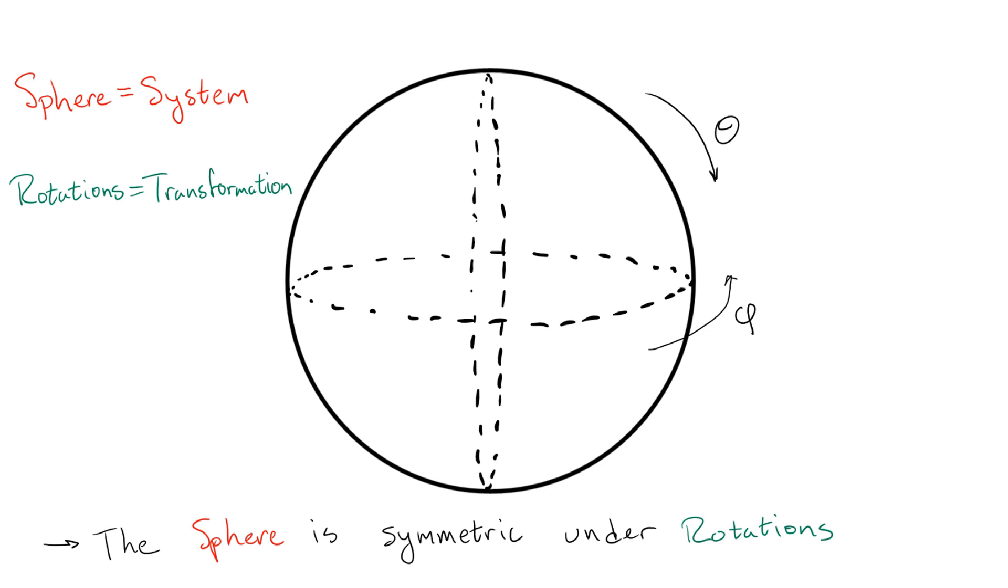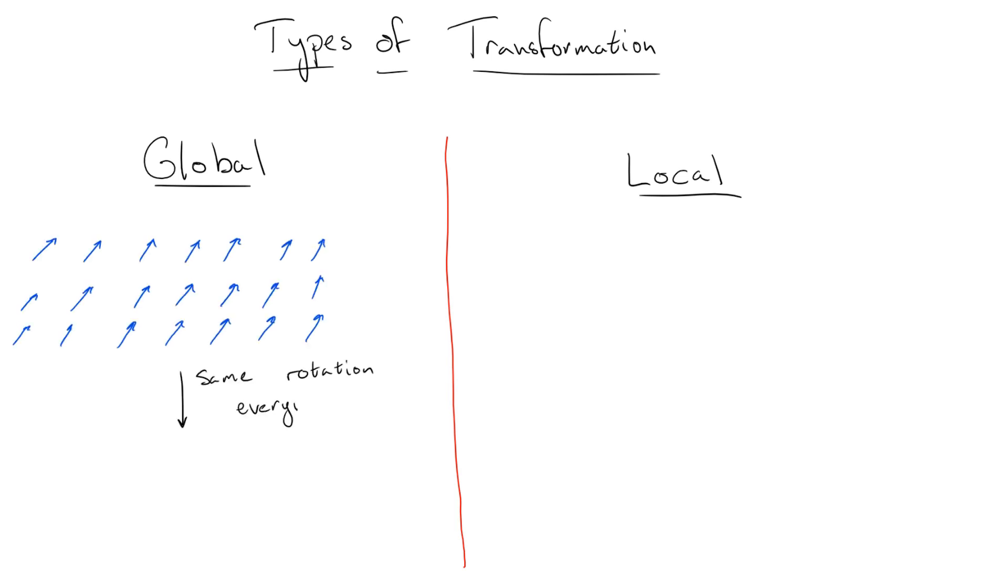So, let's try to break it down a little bit. First, we'll group up different types of transformations into one of two classes, global and local. A global transformation is much easier to think of. This is like when we turn our head to rotate a system or if we move side to side to translate it. Every point in space gets transformed the same way.